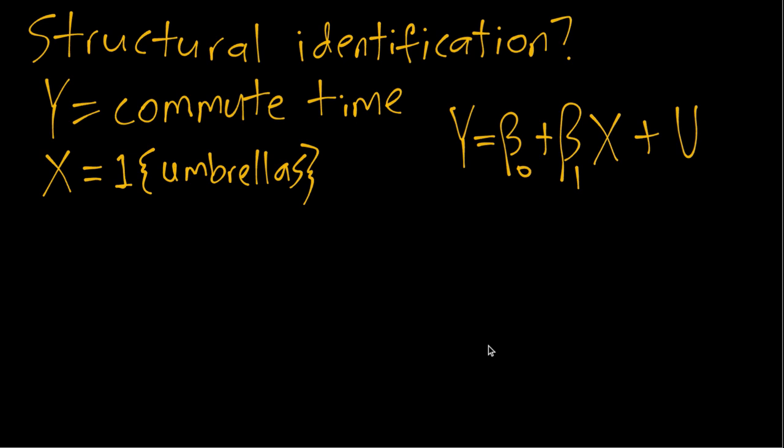So here because we've said this is a structural model, these betas have some causal meaning by the way we've defined it. So beta 1 in particular is a causal effect of x on y. Now thinking about reality, does carrying umbrellas directly cause commute times to be longer? No it does not.